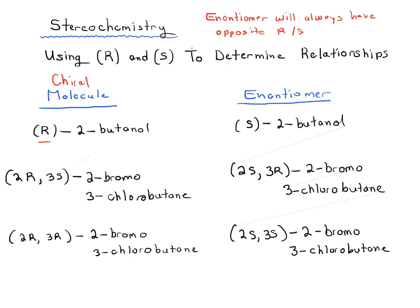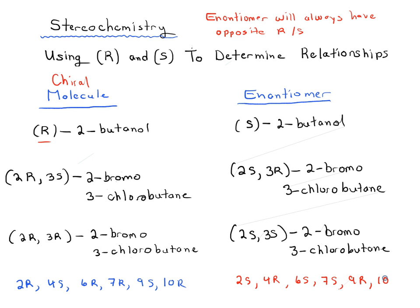Let's imagine a molecule with many stereocenters: 2R-4S-6R-7R-9S-10R. As long as it's a chiral molecule with no mirror plane, its enantiomer will be the exact opposite: 2S-4R-6S-7S-9R-10S. In other words, every stereocenter gets flipped — going from a chiral molecule to its enantiomer, all R's become S's and all S's become R's.